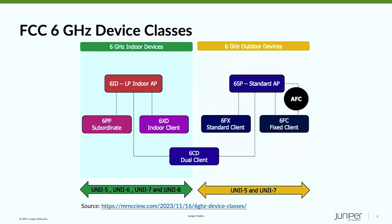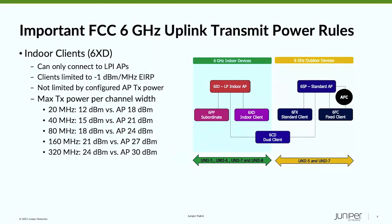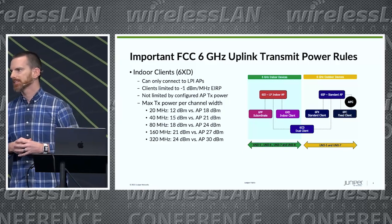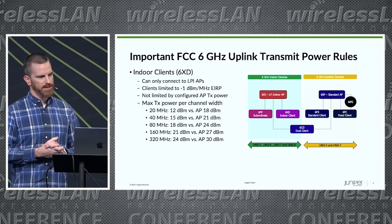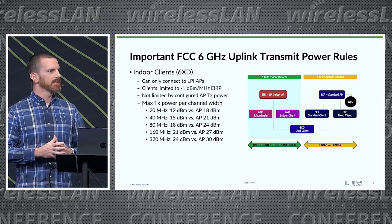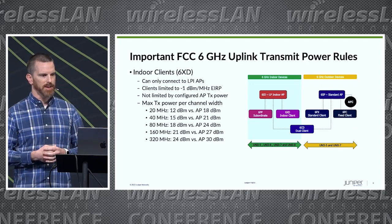So I started looking into why this could be and what some of the reasons are. You've seen this client classification before for 6 gigahertz clients in the U.S. I think there are really three classes that are important. The most important right now is indoor clients, because that's either how everything's classified or how it's operating if it's a dual client connected to an LPI AP. The transmit power limitations are the most interesting thing here. With wide channels — 80 megahertz or 160 megahertz wide — a client can transmit at 18 dBm or 21 dBm EIRP.